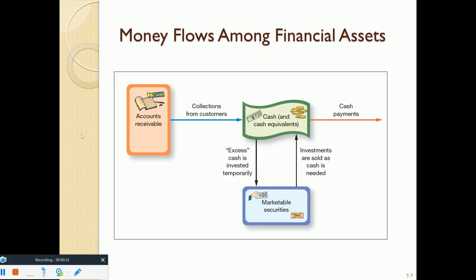This is the money flow. When we provide a good or service to a customer, we enter into an account receivable. Ultimately, we collect that cash. Then we use that cash to pay bills, or if we have excess cash, we might invest some to earn interest or dividends. When excess cash is temporarily invested, that is considered an asset called marketable securities.